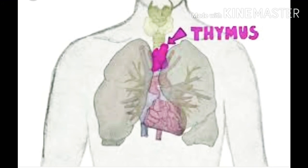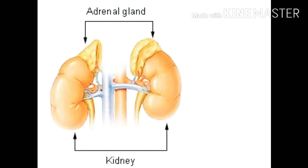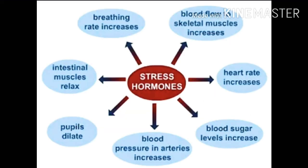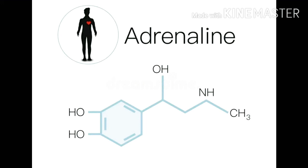The thymus gland is situated in the upper chest near the front side of the heart. It secretes thymus hormone and controls the growth and development of the body. The adrenal glands are a pair of glands situated on the upper side of each kidney. They release adrenaline hormone, which increases metabolism during emergency conditions by increasing heart rate, blood pressure, and respiratory rate. Therefore, adrenaline is also called the stress hormone or emergency hormone.